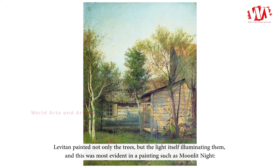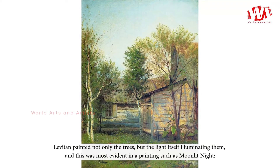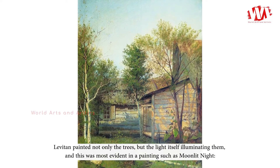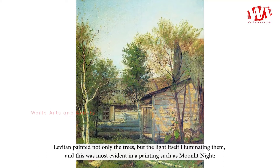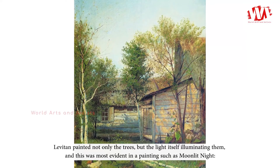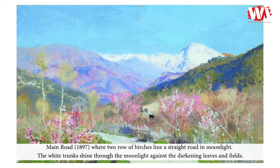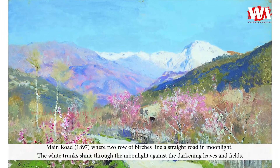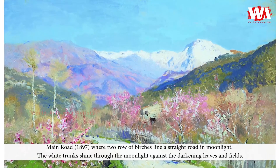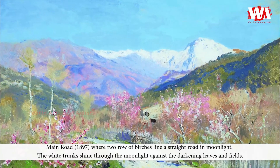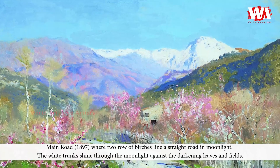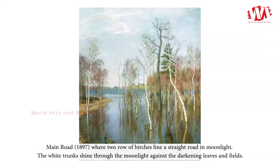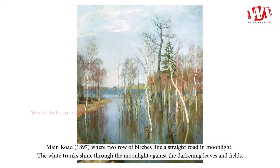Levitan painted not only the trees, but the light itself illuminating them, and this was most evident in a painting such as Moonlit Night: Main Road (1897), where two rows of birches lie on a straight road in moonlight. The white trunks shine through the moonlight against the darkening leaves and fields.